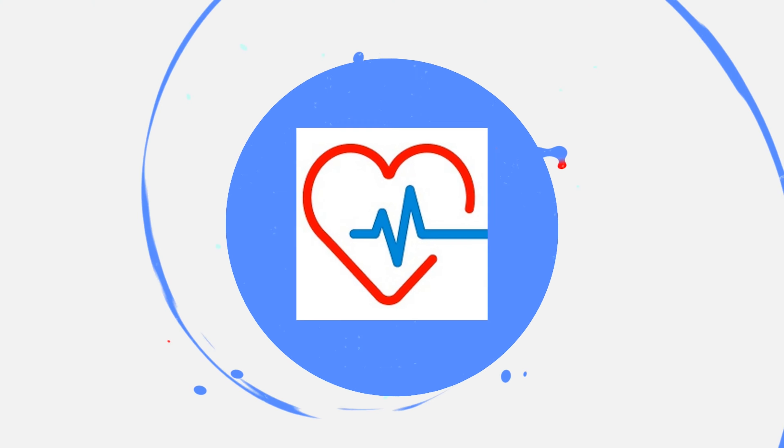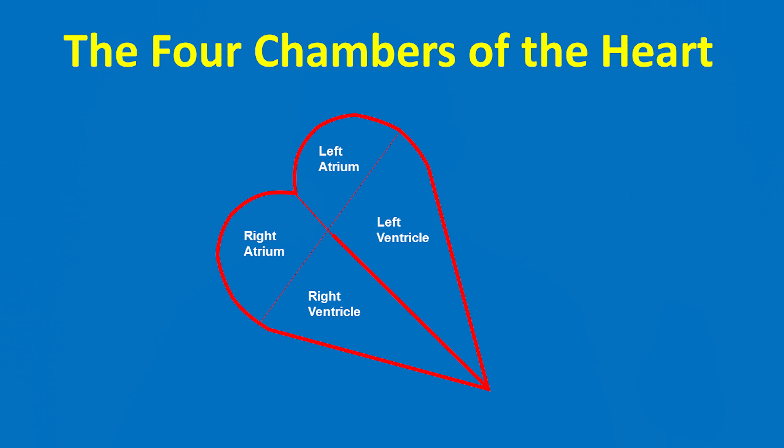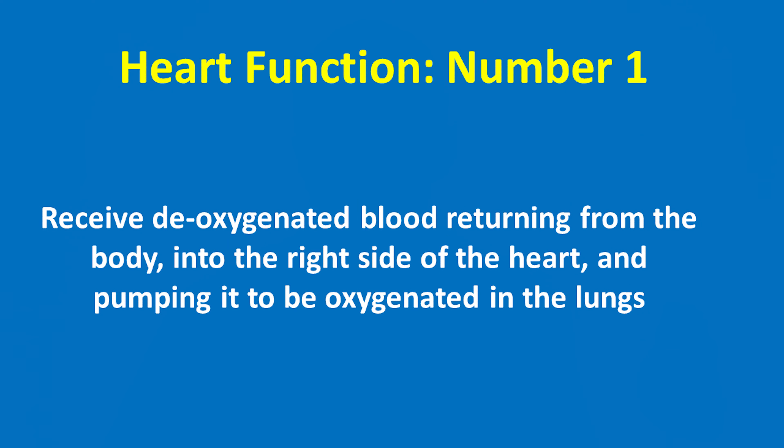Let's get started with this video about the valves of the heart. There are four main chambers in the heart. Two chambers are on the right side of the heart — an upper one and a lower one, named the right atrium and the right ventricle respectively. There are also two chambers on the left side of the heart — an upper one and a lower one, named the left atrium and the left ventricle respectively.